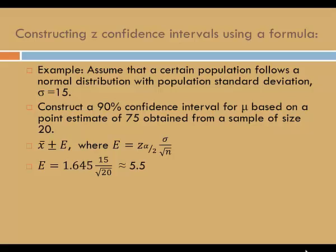We'll multiply this by 15 over the square root of 20. The result is approximately 5.5.